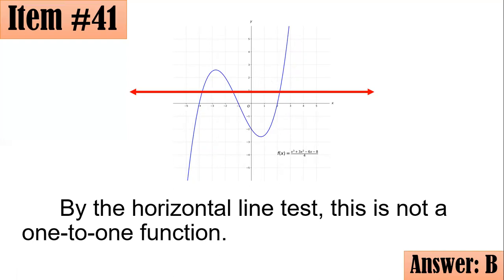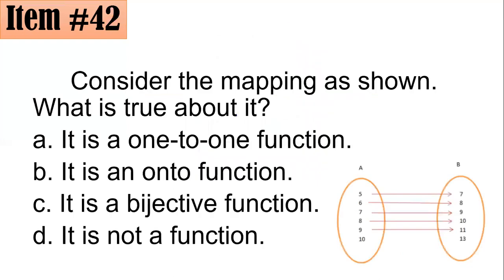Question 42: Consider the mapping shown. What is true about it — is it one-to-one, onto, bijective, or not a function? When we say bijective, it means both one-to-one and onto. Did you answer A, B, C, or D? Let's see if you got it right.